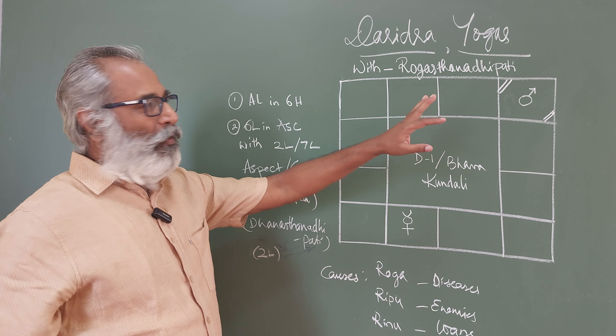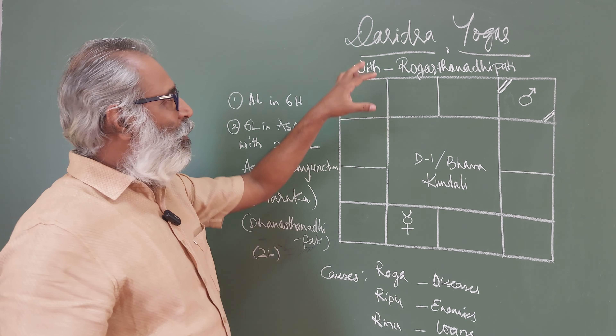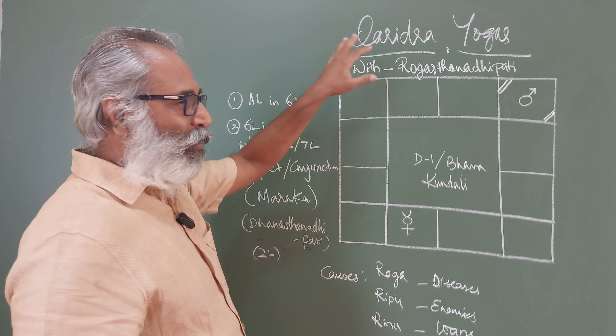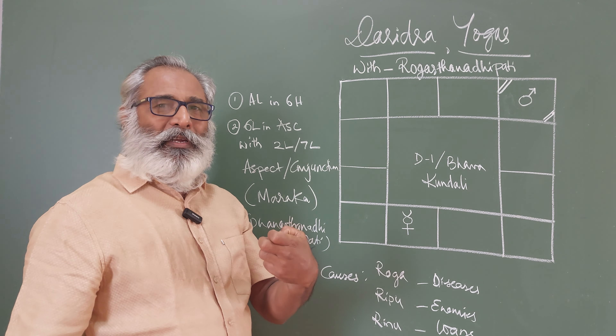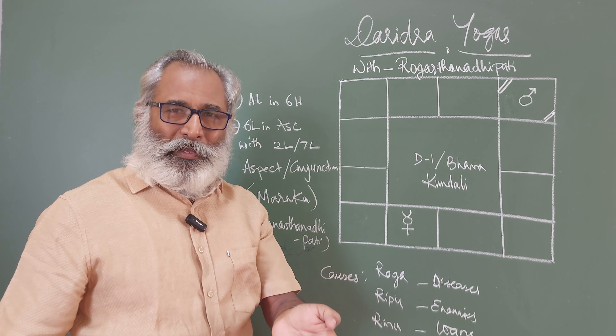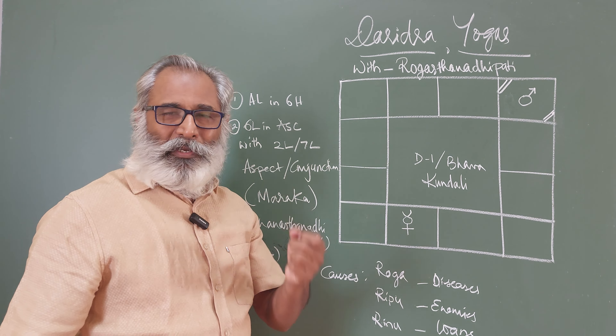The points to be noted for this particular yoga of Dharidra: Dharidra means the yoga which can drive a person into poverty, into bankruptcy, into such a position that he feels miserably low.